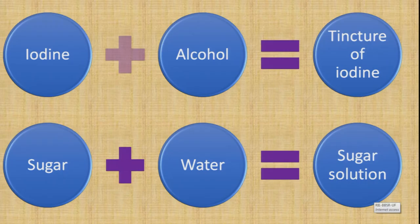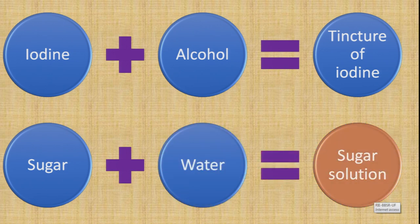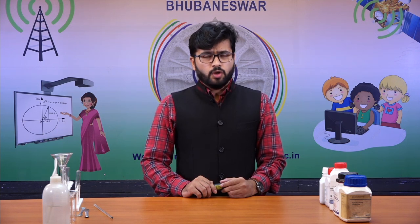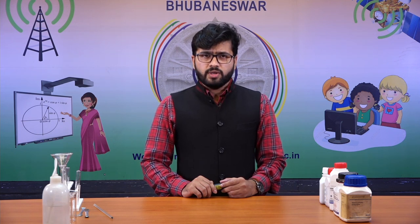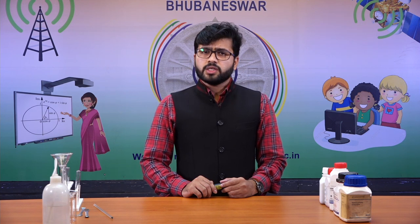When iodine is mixed with alcohol it gives tincture of iodine. Similarly, sugar dissolved in water gives sugar solution — here the solute is solid and the solvent is liquid. When carbon dioxide is dissolved in water we get aerated drinks, commonly used as cold drinks in day-to-day life. This is an example of a true solution.